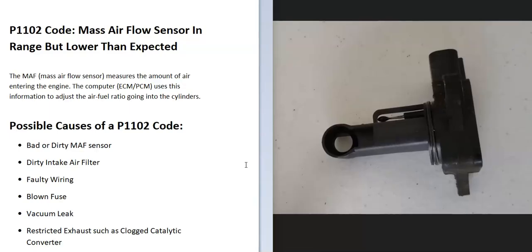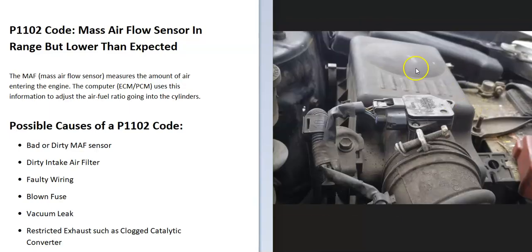What does this mean? There's a mass airflow sensor located near the air intake box, and it measures all the air that goes into the engine. The onboard computer uses this information to adjust the air-fuel ratio mixture that goes into each cylinder. The onboard computer has seen a problem with this, so it will need to be troubleshot.